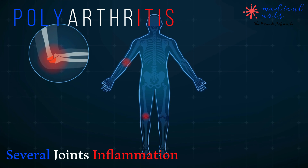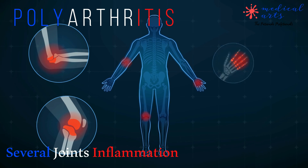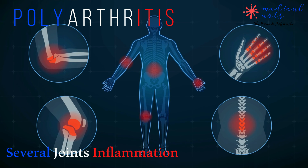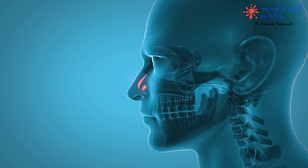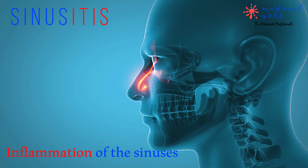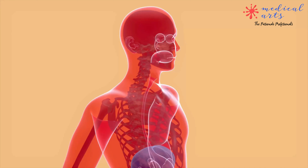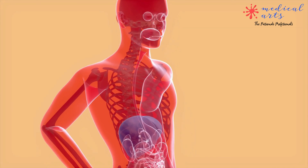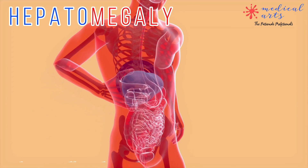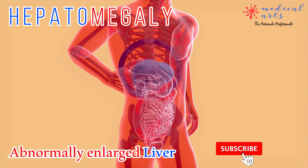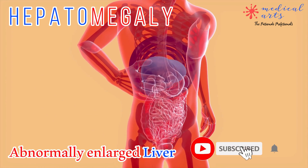Polyarthritis is the inflammation of multiple joints. Sinusitis is the inflammation of the sinuses. Hepatomegaly is an abnormally enlarged liver.